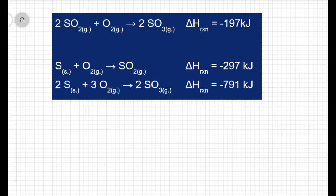These two reactions don't actually add up to my overall reaction. The first hint I see is the sulfur dioxide. In the overall reaction, the sulfur dioxide is a reactant, but if I look at my steps, the sulfur dioxide is a product. So before we can add the steps together, we have to make the steps match our overall reaction.